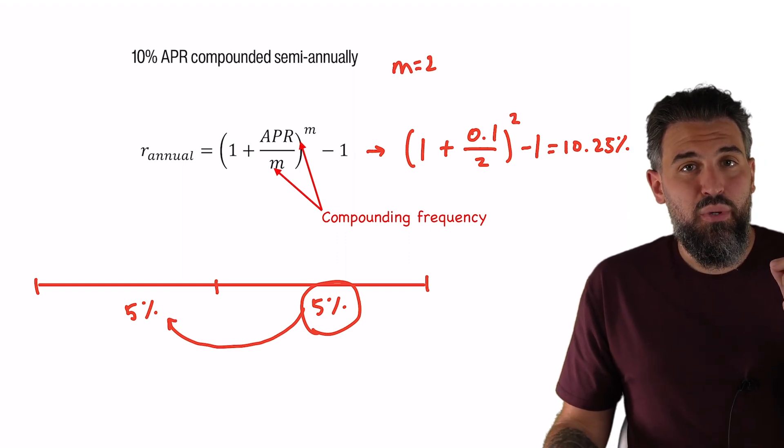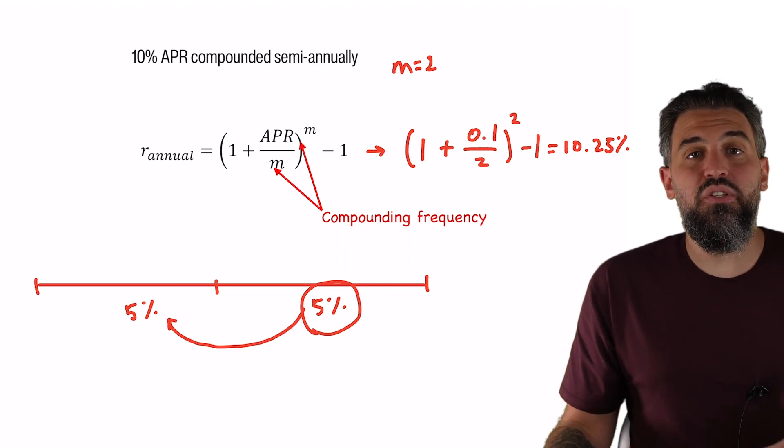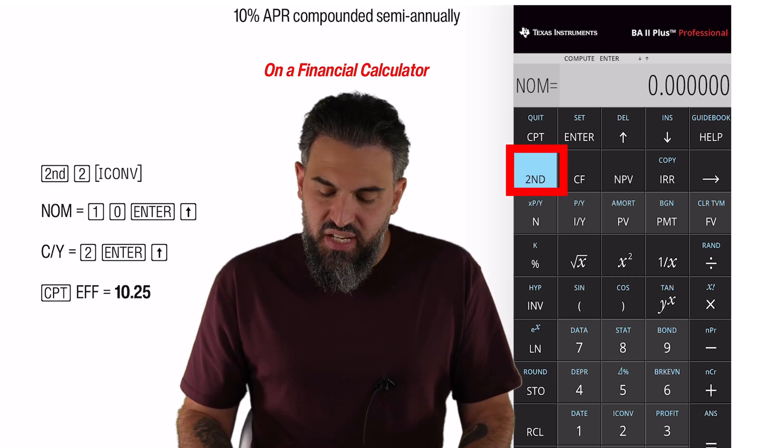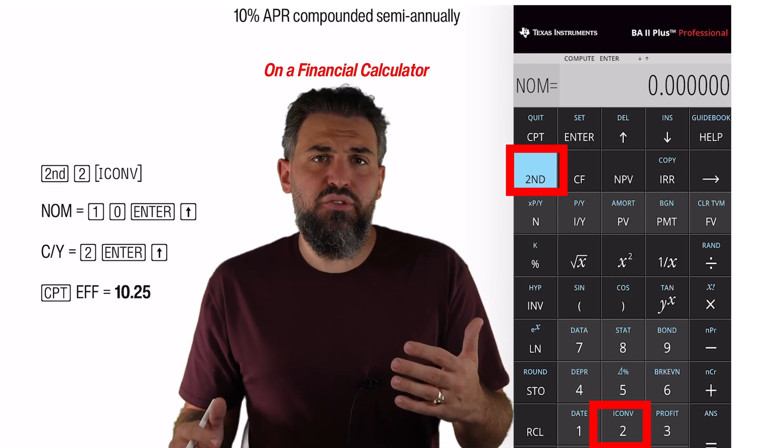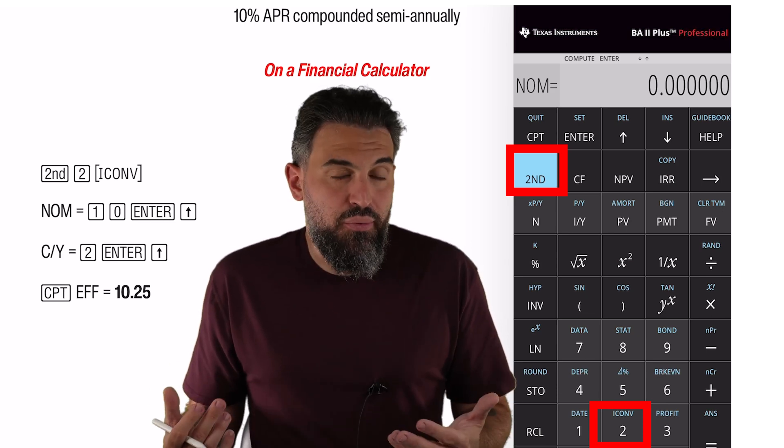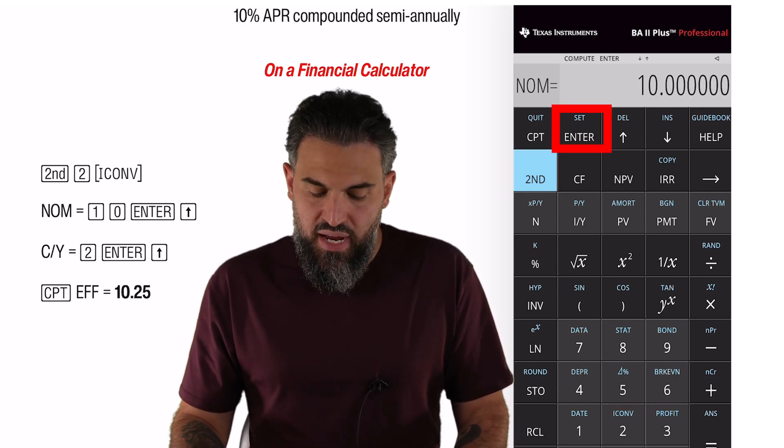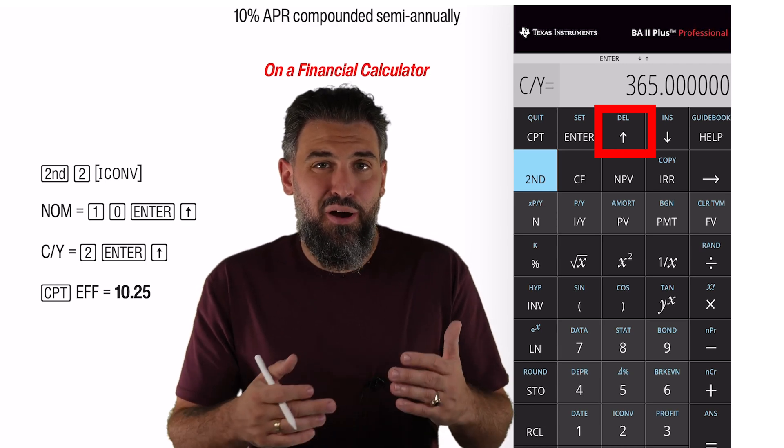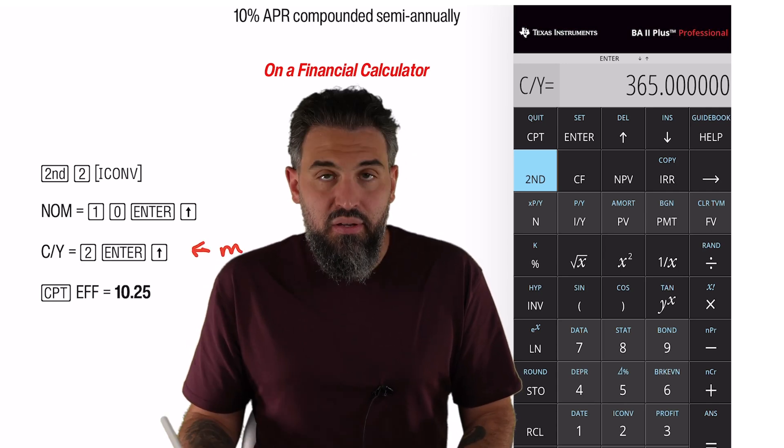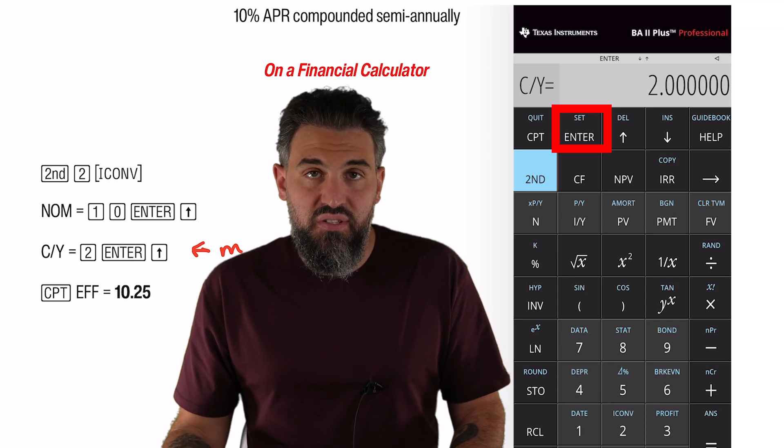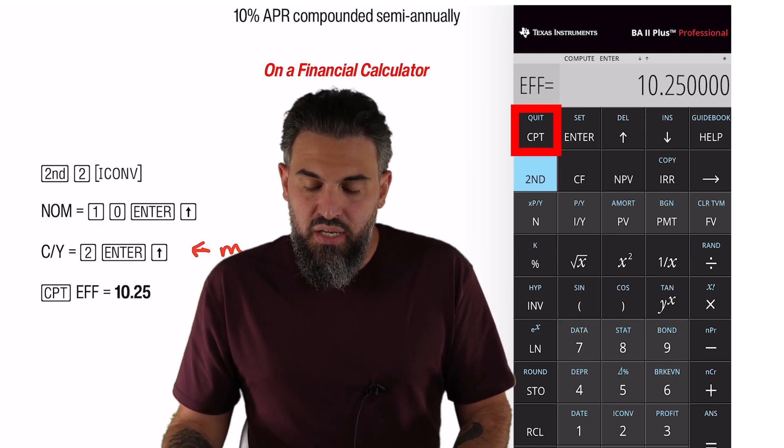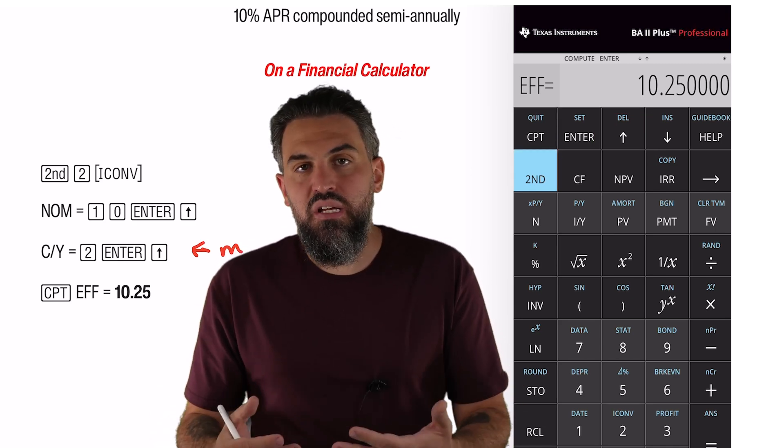To do this on the financial calculator—and I'm using a Texas Instrument BA2 Plus, it's the best calculator in my opinion—second function 2, that'll take you to the I convert tool. It's what we use to calculate effective rates. So NOM, that's our nominal rate, we're gonna enter 10, so one zero enter. Then I'll arrow up. C/Y stands for compounds per year, that's like M from the previous example. I'm gonna enter 2 and then press enter to save it, arrow up. Now here's my effective rate, I'm gonna go ahead and hit compute. I've got my 10.25%. So it's the same thing as using the formula, but for those of you that have or like to use the financial calculator, there's just another way to do it.